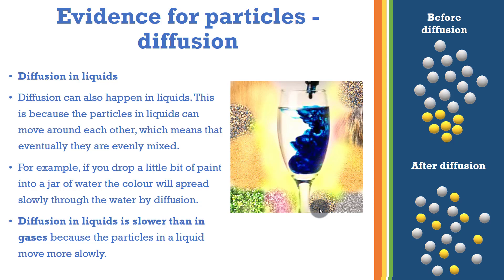Diffusion can also happen in liquids, because the particles in liquids can move around each other, and eventually they are evenly mixed. As you can see in this diagram, once you pour some ink into water, the ink doesn't dive straight to the bottom — it spreads, and the darker ink becomes paler as it spreads throughout the liquid. If you drop a little bit of paint into a jar of water, the color will spread slowly through the water by diffusion.